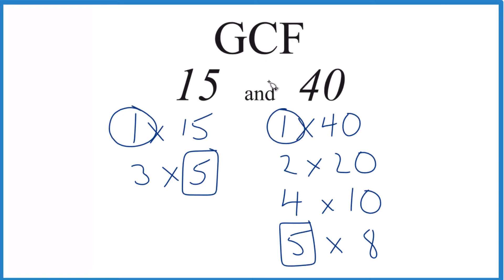So in answer to our question, the GCF, greatest common factor for 15 and 40, that's going to be 5.